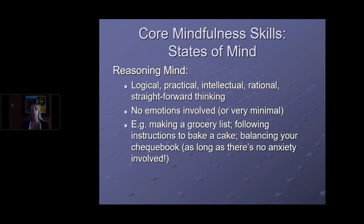When we're in reasoning mind we're using our logical, straightforward, rational thinking — thinking in facts. For example, making a grocery list, looking through your cupboards and fridge, or following instructions to bake a cake, measuring things out and following directions — those are reasoning mind. When you're in reasoning mind, there are no emotions involved, or if there are emotions they're very small, on the back burner, and not influencing your behavior.